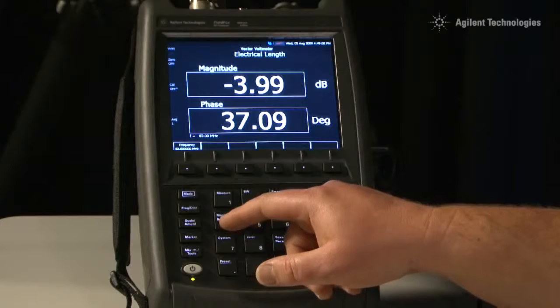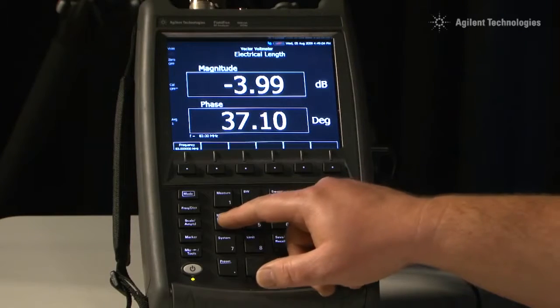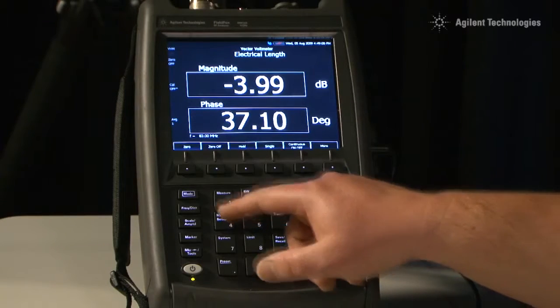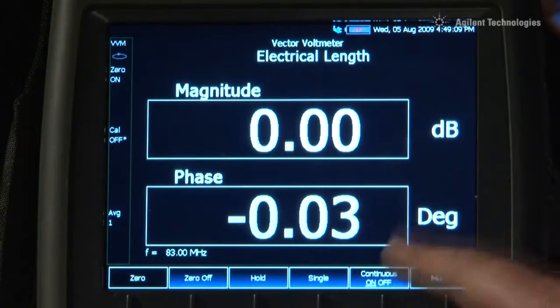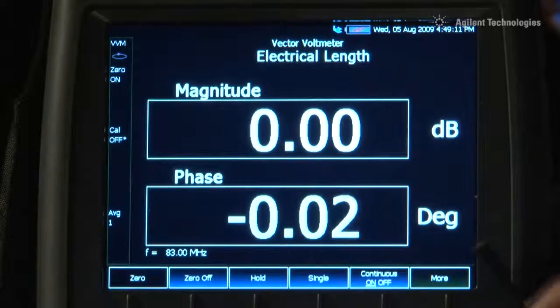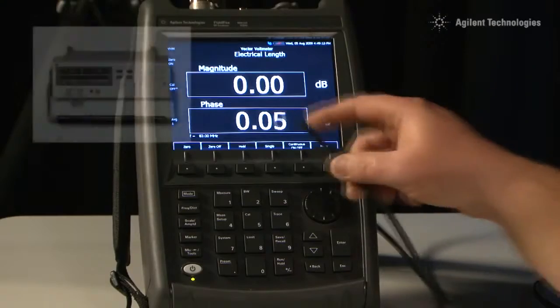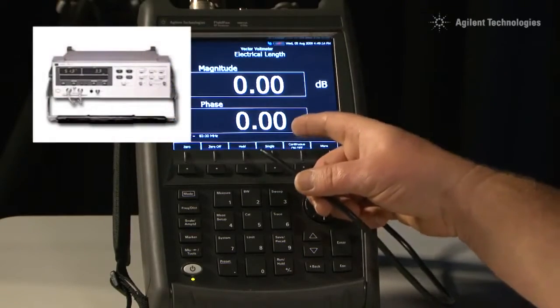The Vector Voltmeter option lets us compare the electrical length of devices. For example, we can accurately phase trim cables for radar and direction finding systems, producing matched pairs with the same electrical length and phase delay, just like we did with the old HP8508A Vector Voltmeter.